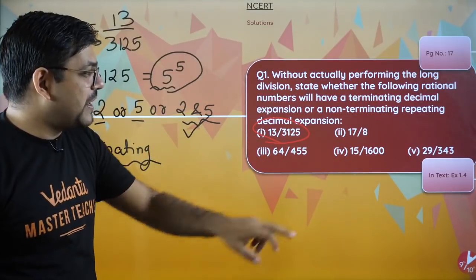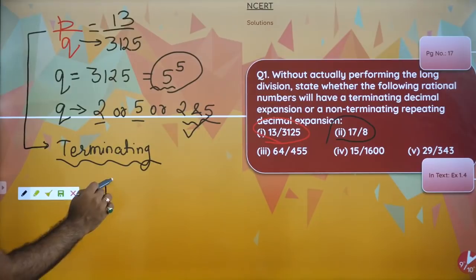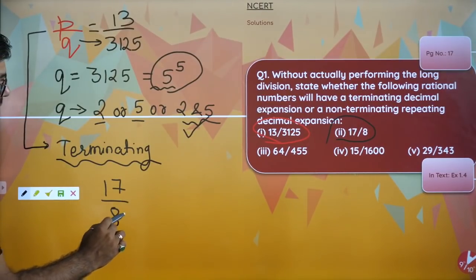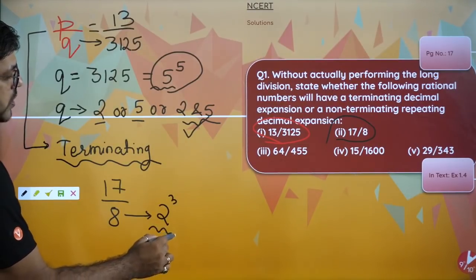Let's concentrate on the second one. In the second one, same type of ideology applies. 17 by 8 - concentrate on the denominator, which is 2 raised to power 3. So only 2 is there, so again it is going to give me terminating.